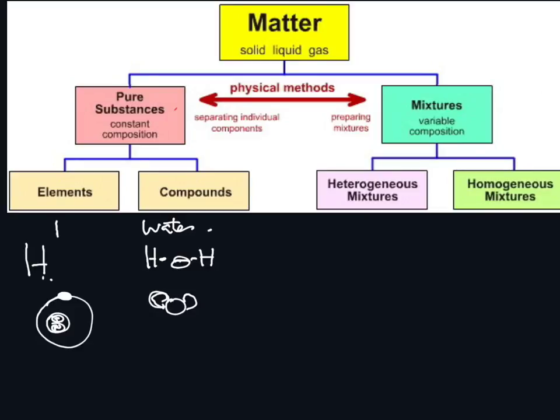There are different types of mixtures: heterogeneous and homogeneous. 'Homo' means one — a homogeneous mixture forms one complete, uniform thing, meaning it's completely mixed together.